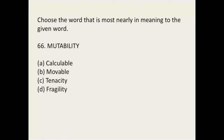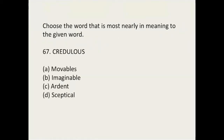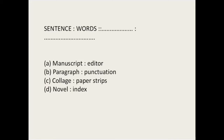Next word: 'mutuability.' Mutuability basically refers to what happens when someone is in a state of confusion or uncertainty — it means uncertain. Fragile is the nearest answer. Credulous means someone who easily believes anyone. It can't be movable, imaginable, or skeptical. The answer here relates to being uncertain — fragile is closest, and the answer among given options is the one meaning urgent or passionate and enthusiastic.